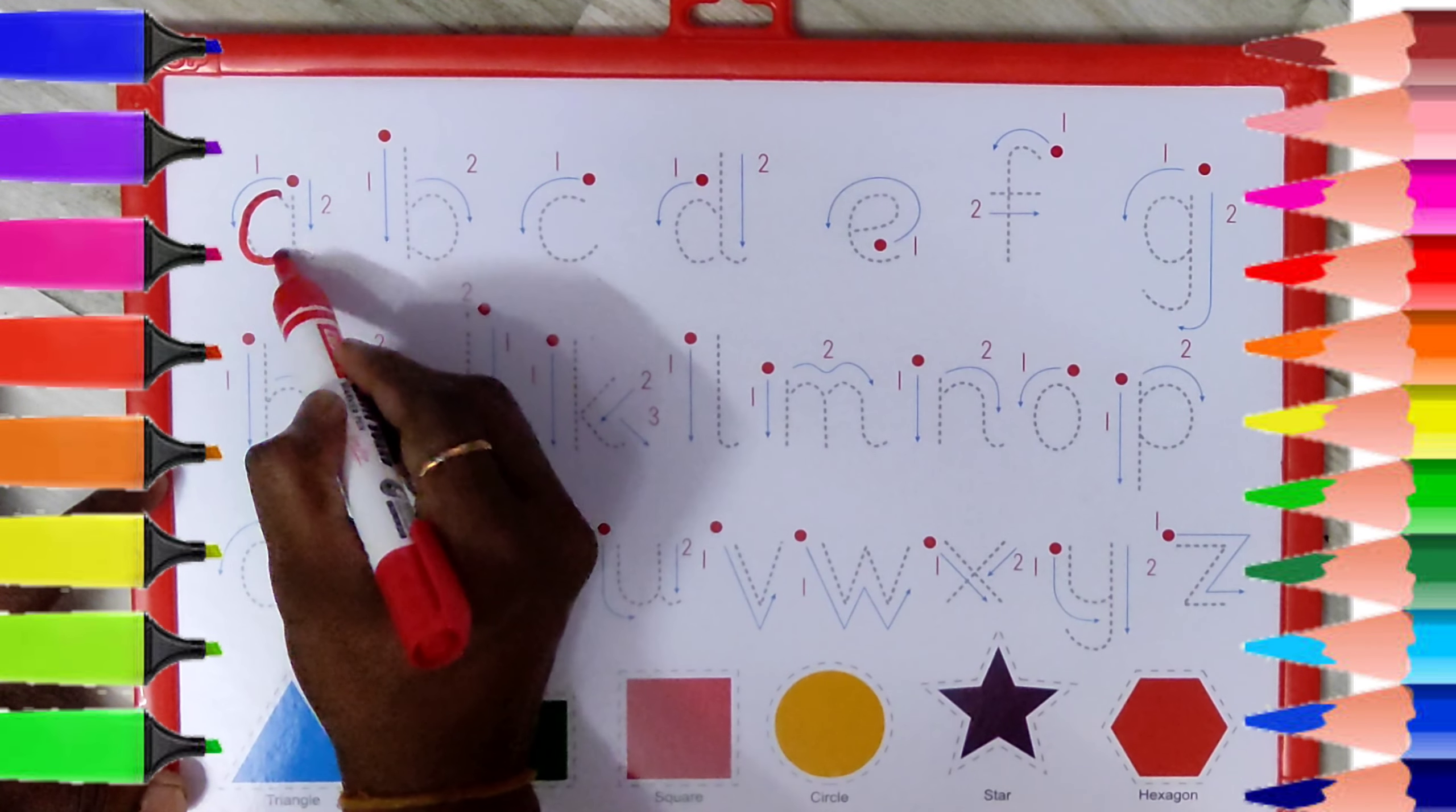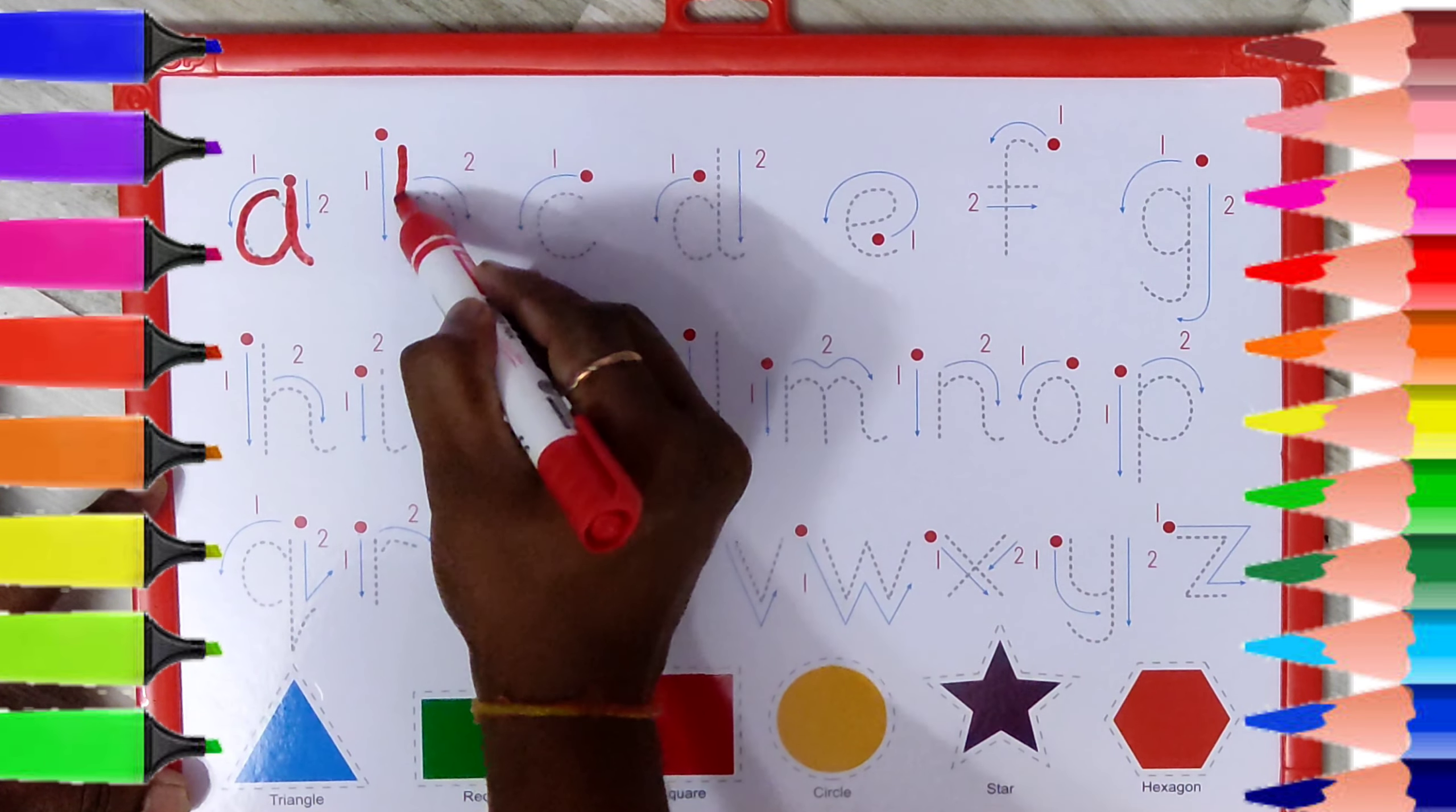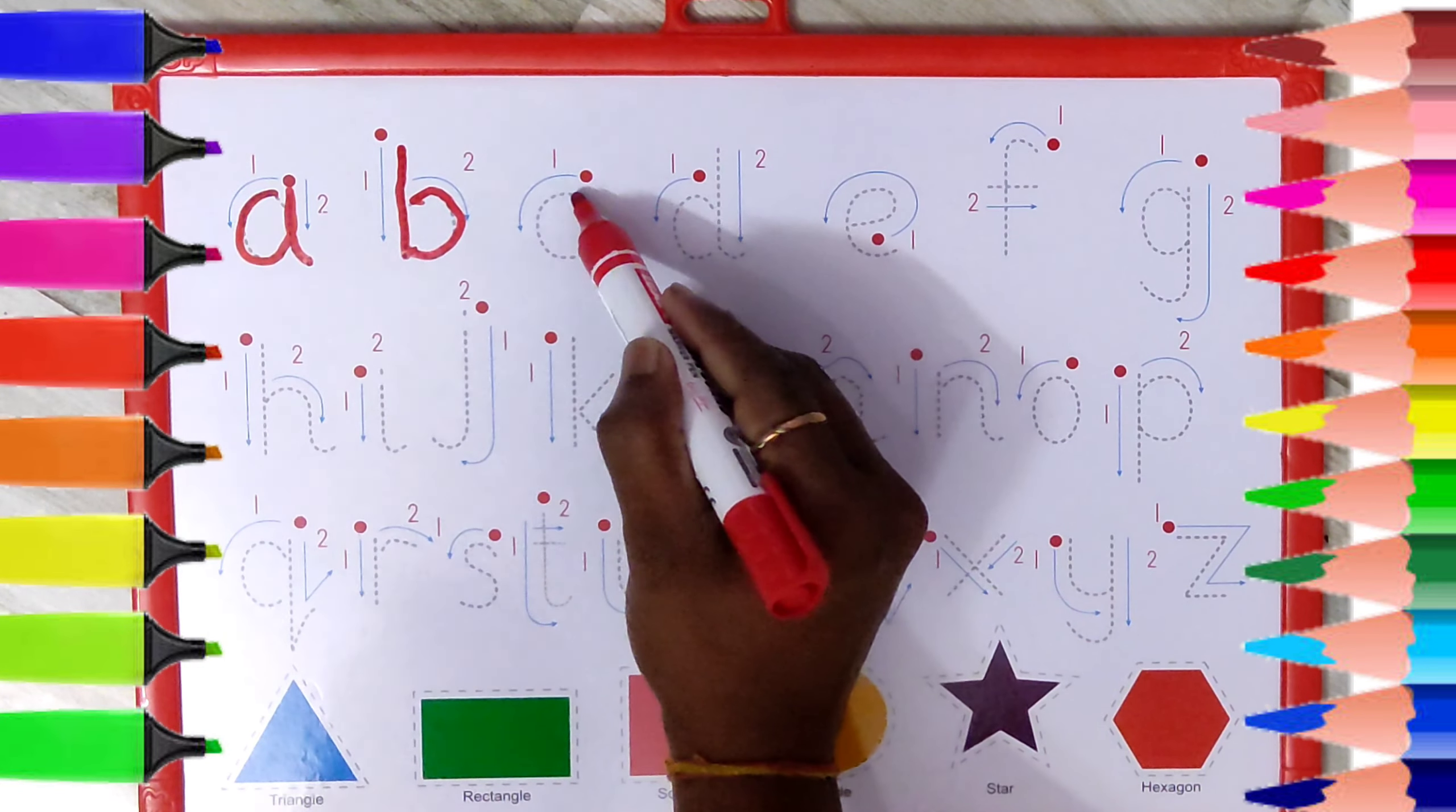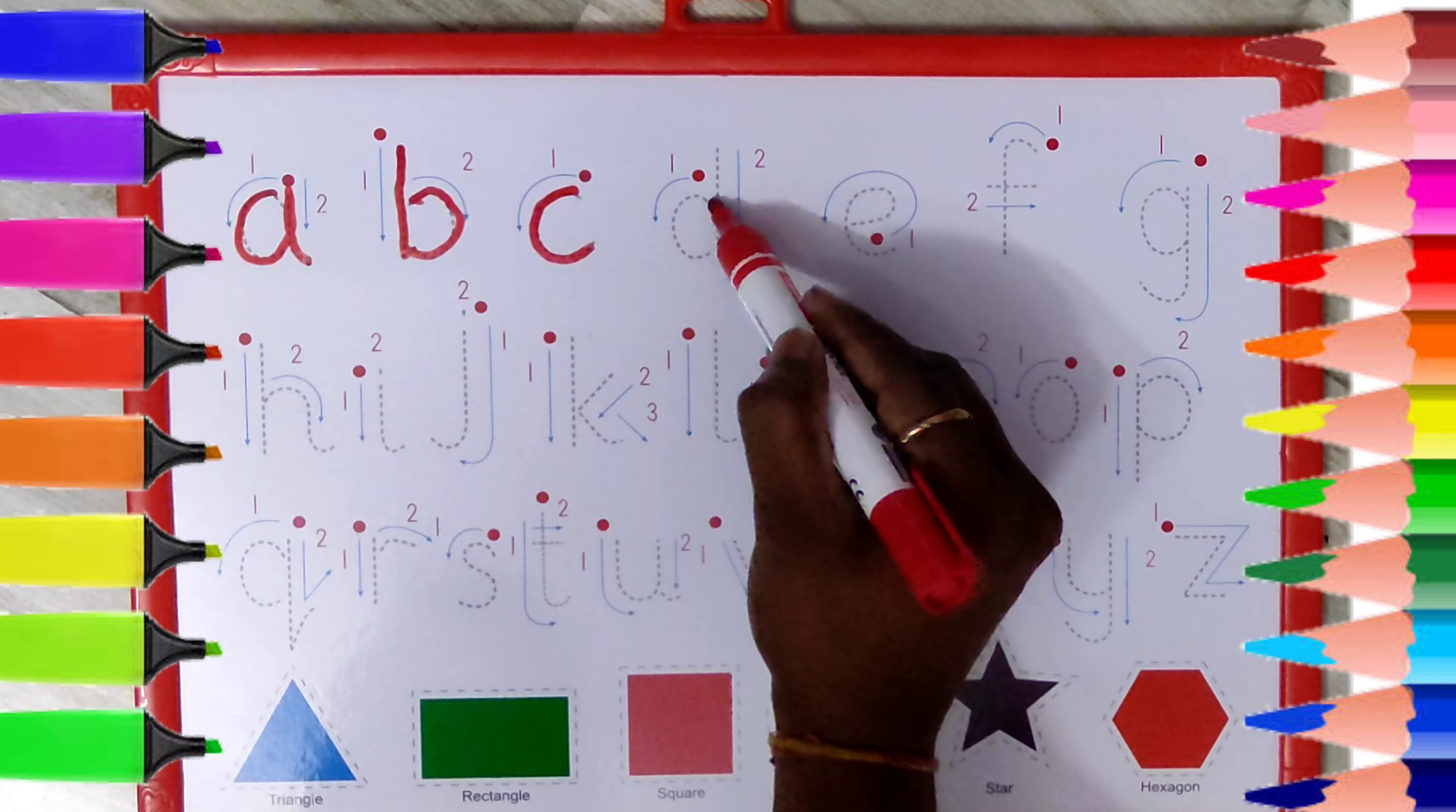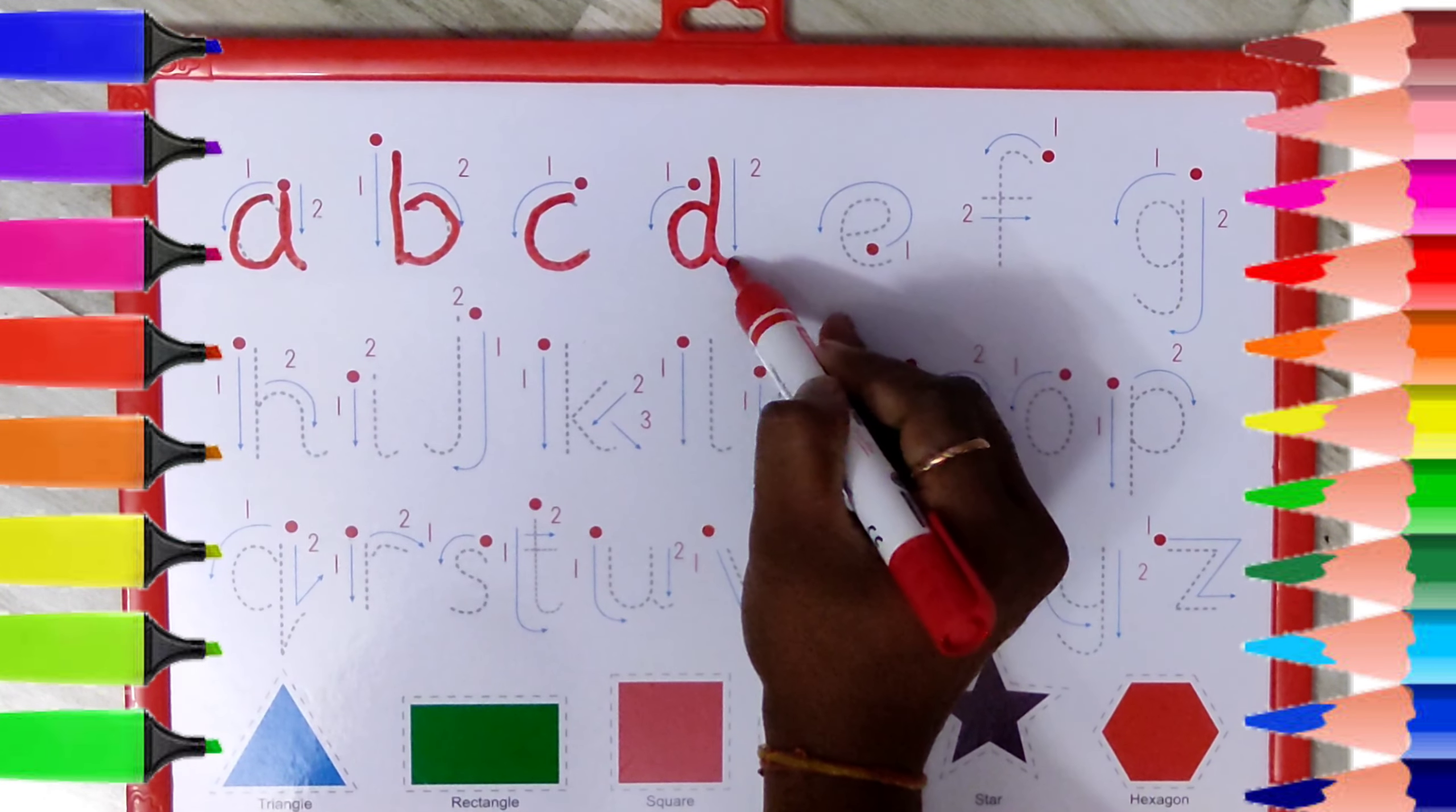Small a, a for apple. Small b, b for ball. Small c, c for cat. Small d, d for dog.